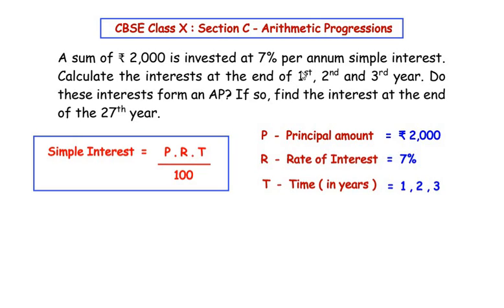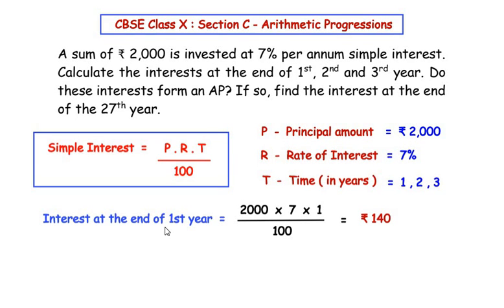For the first year, T = 1. So the interest at the end of the first year equals 2000 × (7/100) × 1. Cancelling two zeros from the denominator and two zeros from the numerator, we are left with 20 × 7 × 1, giving us rupees 140. So the interest at the end of the first year is rupees 140.